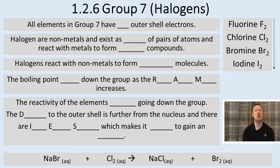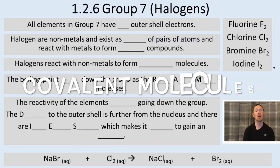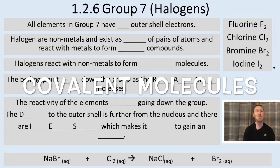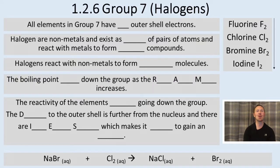Halogens react with non-metals to form covalent molecules where they share electrons. A covalent bond is a shared pair of electrons. For instance, hydrogen and chlorine will each share an electron to make hydrogen chloride, HCl, which is a gas at room temperature.